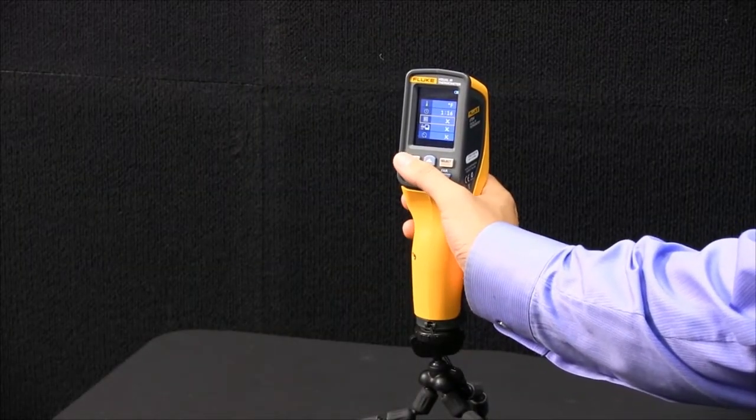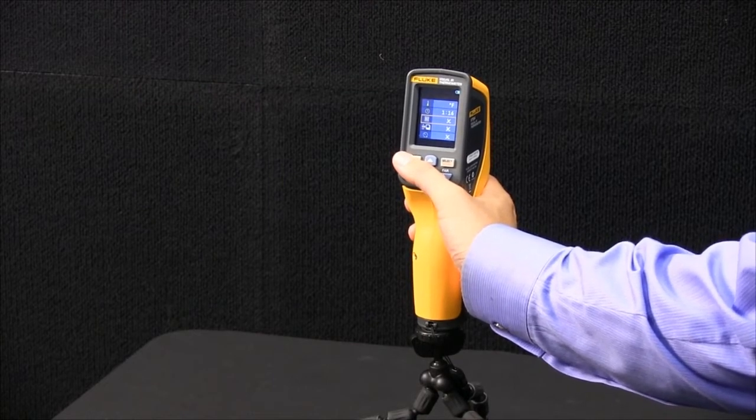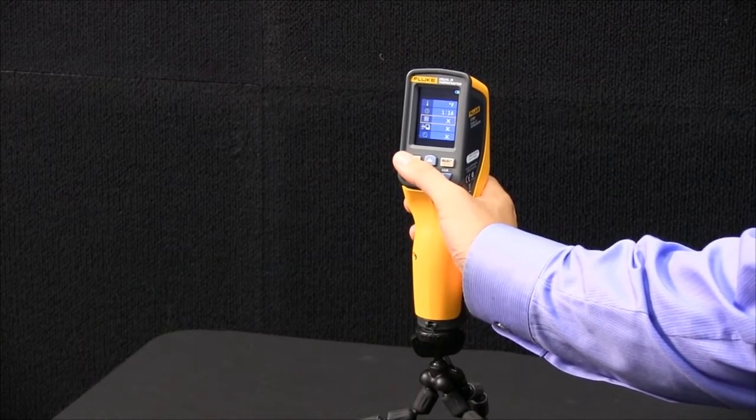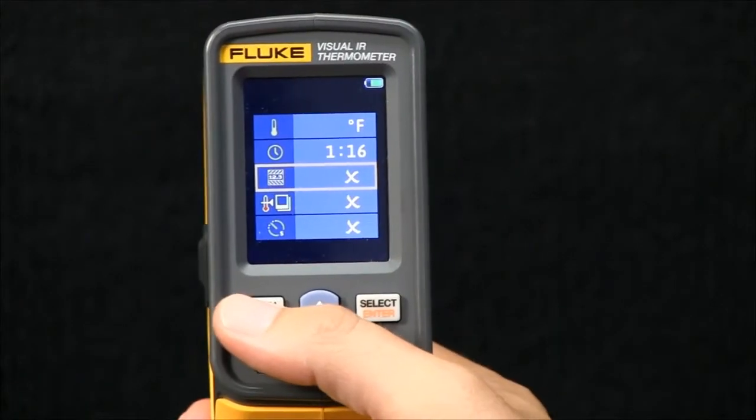The high-low temp alarm on the Fluke VT04 is used to help you quickly identify temperatures that are either above or below your determined threshold. I'll show you how to set the high-low temp alarm.